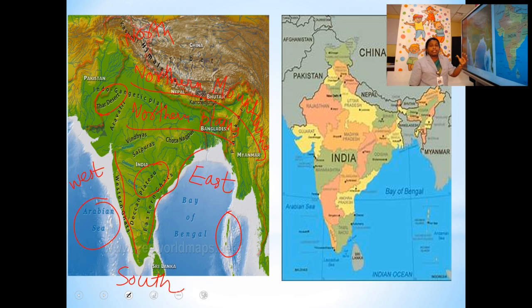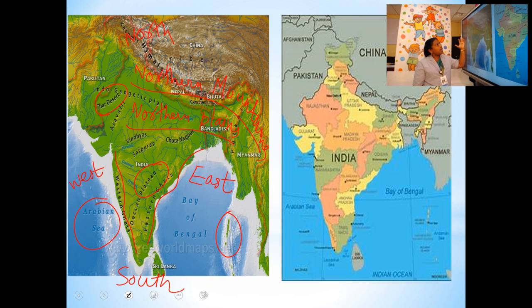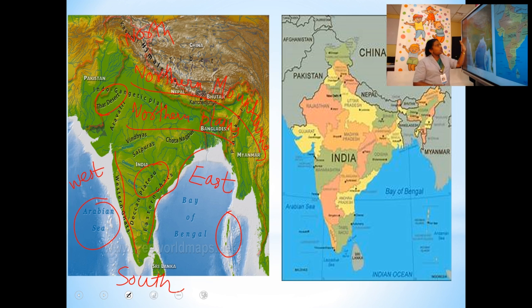So the physical features of India are: mountains, plains, plateau land, desert, coastal areas, and islands. These are the six natural features of India.